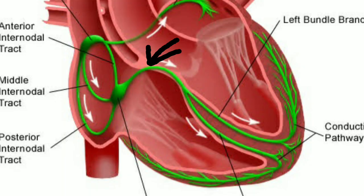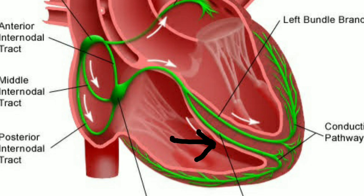After the AV node, the impulse speeds up again and enters the bundle of His, then divides into the left bundle branch and right bundle branch located in each ventricle. The left bundle branch has two fascicles: anterior and posterior. At the end of both bundle branches are Purkinje fibers, which are embedded in the ventricular muscle and deliver the impulse directly to it.